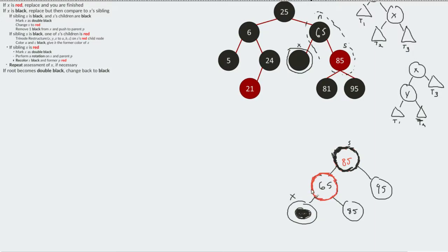I look at all the same problems as before. I say, well, what are my situations? Well, I happen to notice that I happen to have a sibling. I'll get rid of this s now. I happen to have a sibling which is black, and the children of that node are also black.